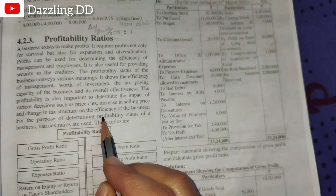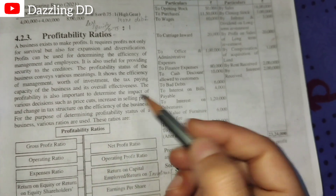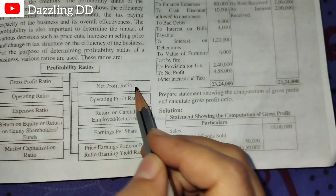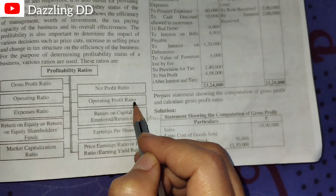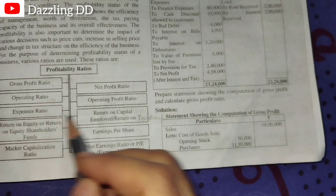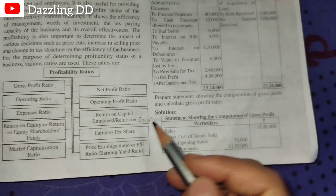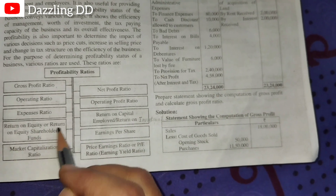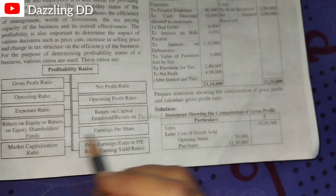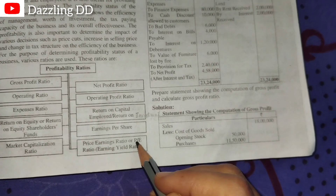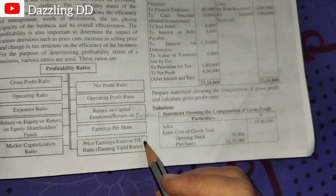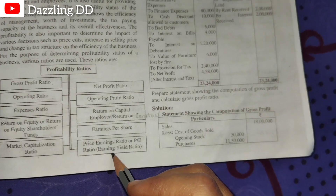In the profitability ratios of a firm, there are several ratios: Gross Profit Ratio, Net Profit Ratio, Operating Ratio, Operating Profit Ratio, Expenses Ratio, Return on Capital Employed, Return on Investment, Return on Equity, Shareholders Fund, Earnings Per Share, Market Capitalization Ratio, Price Earnings Ratio (P/E Ratio), and Earnings Yield Ratio.